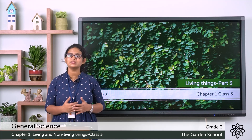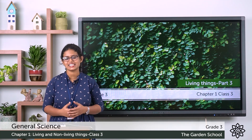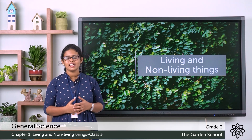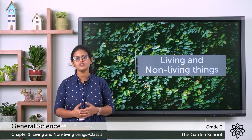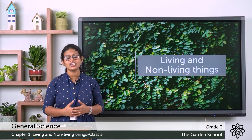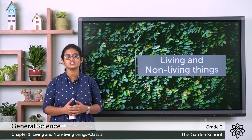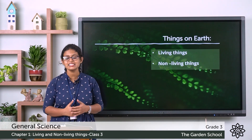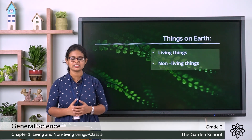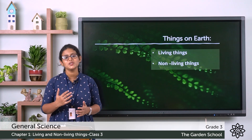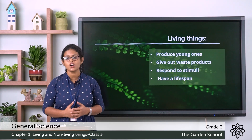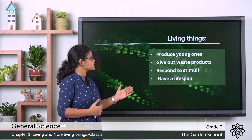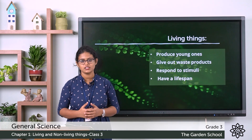A very good morning to all and welcome to the third class of General Science. We started with the chapter 'Living and Non-Living Things' and discussed the features of living things. Today let's discuss some other unique features of living things. Things on earth can be classified as living and non-living things. The features we'll cover today are: produce young ones, give out waste products, respond to stimuli, and have a lifespan.